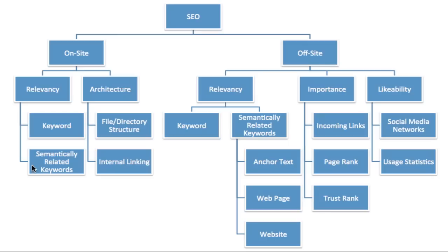They have the technology to cross-reference terms to other highly related terms and algorithmically gauge whether content is being keyword stuffed or whether it's actually good content. When we talk about architecture, we're talking about the file and directory structure of the website, and also the internal link structure. We want the URL to contain really good keywords and be easy to use and not confusing to searchers on your website.